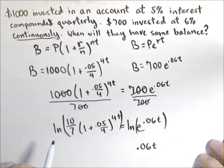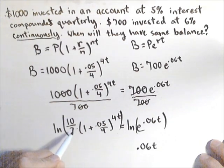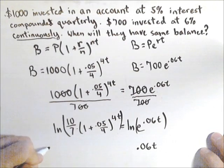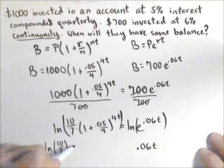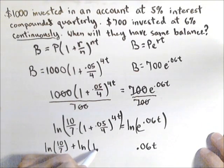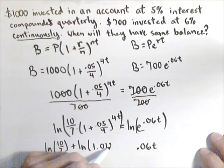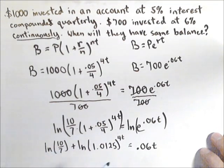Now on the left hand side it's not quite so straightforward. We cannot pull the 4t out front right now because 10 sevenths is not raised to the 4t. We're going to have to use a property of logs, in fact the property of logs for multiplication, which says it turns into addition. So we have natural log of 10 sevenths plus natural log of 1.0125 to the 4t, and that's equal to the .06t.